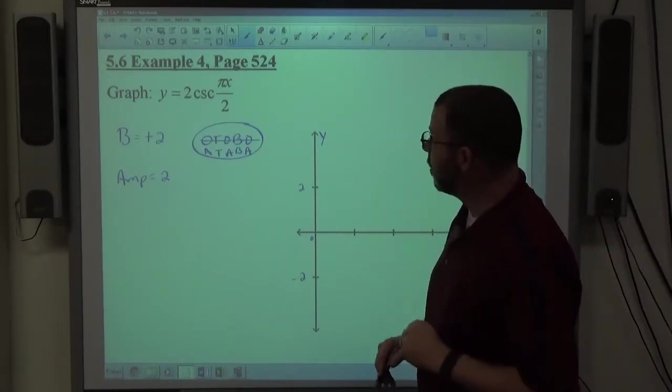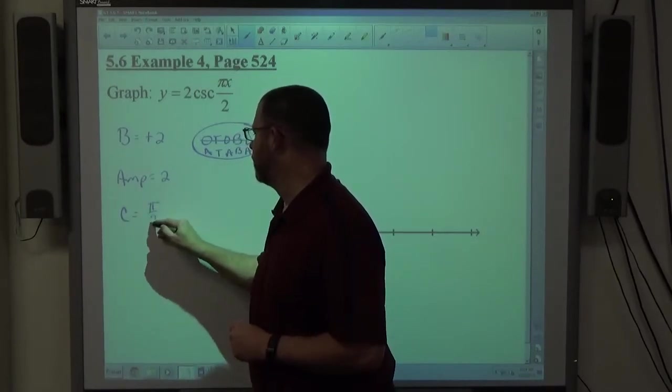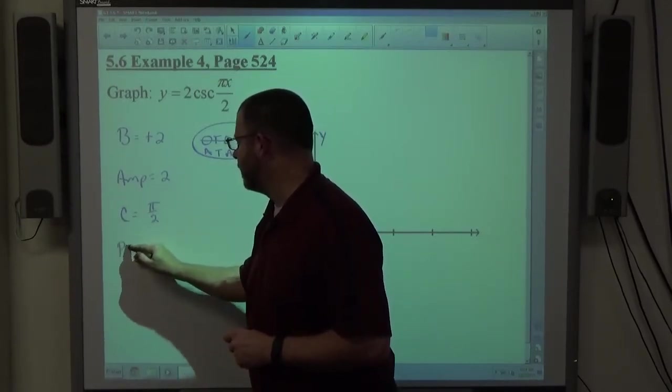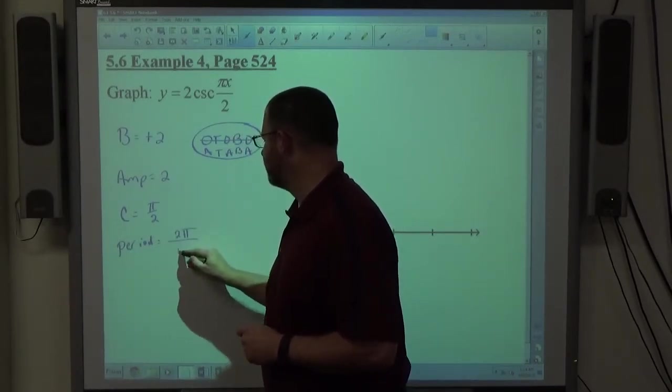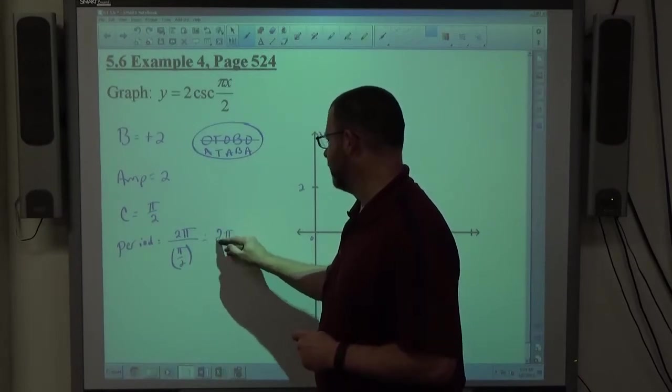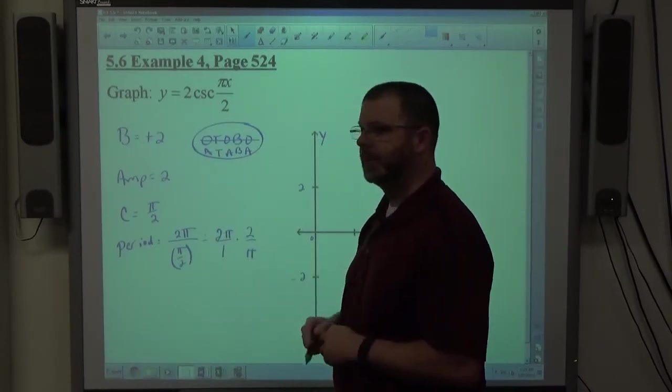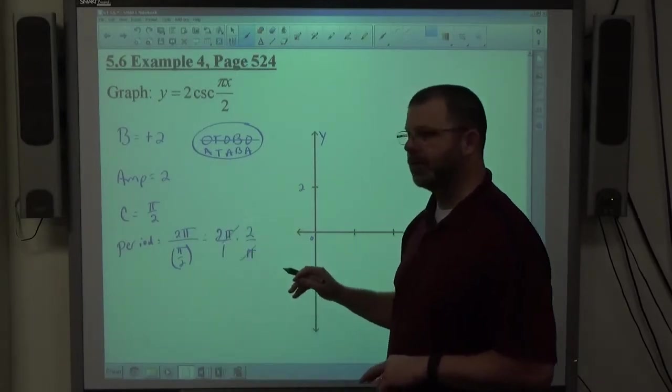And then cosecant of pi x over 2, so what's in front of x is pi over 2. So c is equal to pi over 2, which means that the period is 2 pi divided by pi over 2, which is just 2 pi times 2 over pi. So strike the pi's out, multiply it 4.